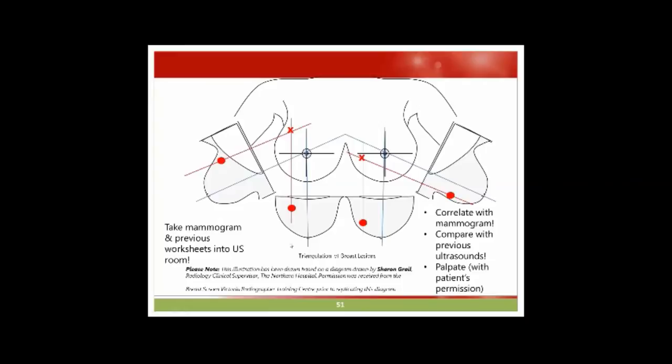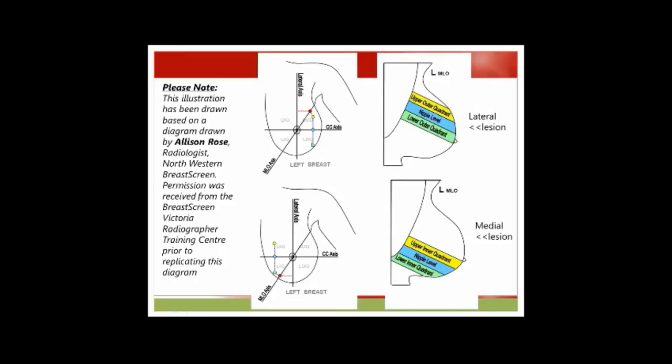Understanding triangulation: because the MLO is done with a sloping oblique technique, it's easy on the craniocaudal to determine medial or lateral. Medial lesions will appear lower on the MLO, and lateral lesions will appear higher — so you can work out triangulation to correlate your ultrasound finding with the correct mammographic location.